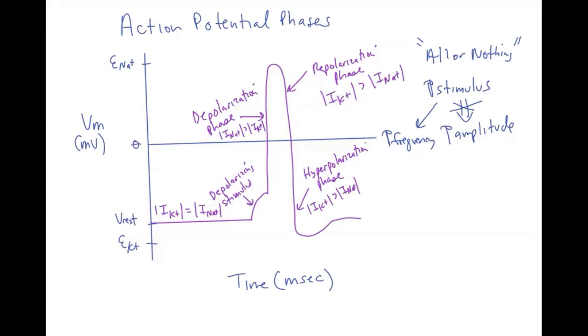So now we're going to talk about action potential phases. On the y-axis here, we have the membrane potential in millivolts, and we see that we have the equilibrium potential for potassium being a negative value, which is what we expect from a cation that has a high concentration on the inside relative to the outside.